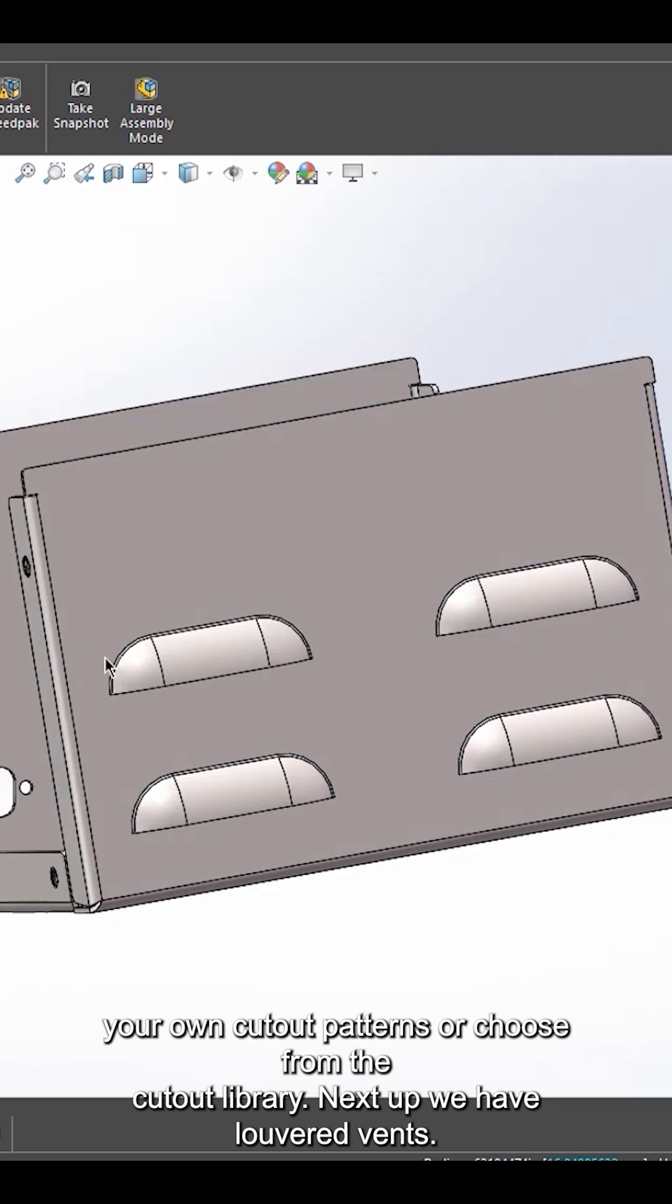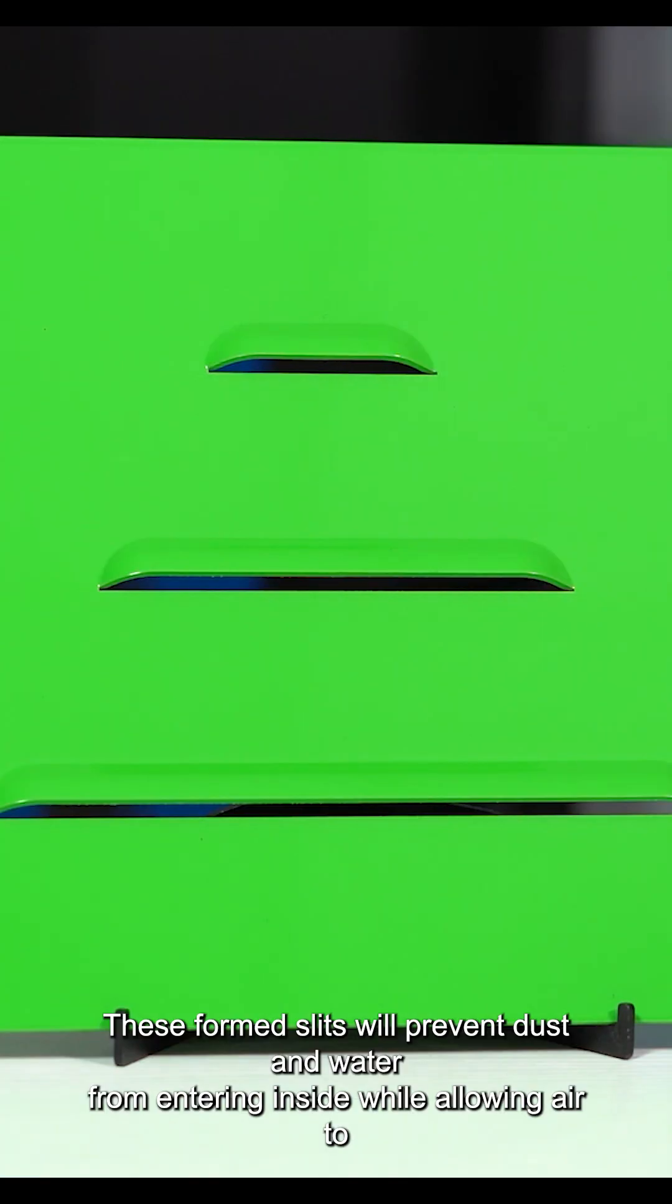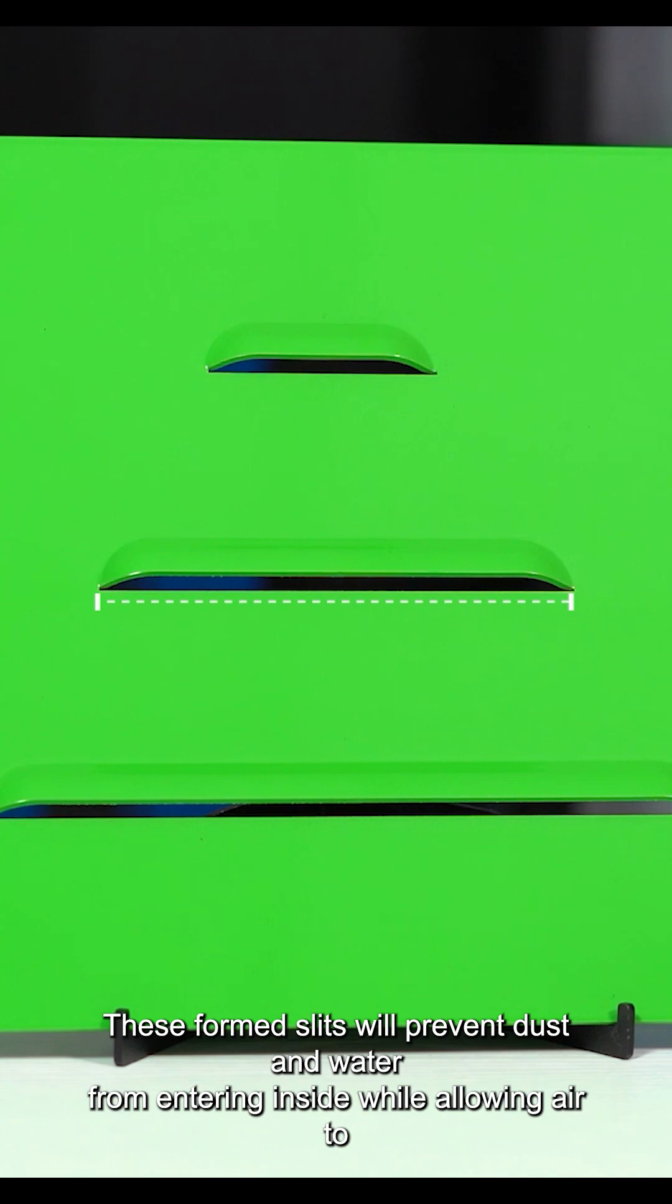Next up we have louvered vents. These formed slits will prevent dust and water from entering inside while allowing air to pass through it.